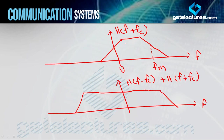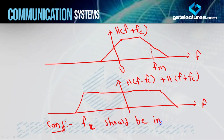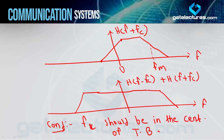Toh yahan par jo sabse important condition hai is target ko achieve karne ke liye - ki H(F − FC) plus H(F + FC) jo hai woh constant hona chahiye, woh one hona chahiye - woh hai: FC should be in the center of transition band. Yeh bahut important condition hai. FC should be in the center of transition band. Agar aapko VSB ke output mein proper message signal chahiye toh, otherwise aapko proper message signal receive nahi hoga.